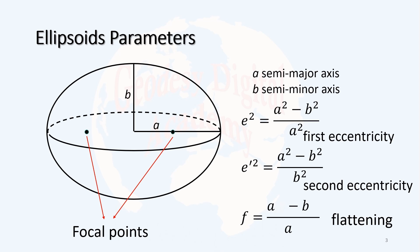An ellipse is defined by two focal points. A circle has one center, or one focal point, but an ellipse has two. When these two focal points get closer to the center of the ellipse, the ellipse becomes closer to a circle.